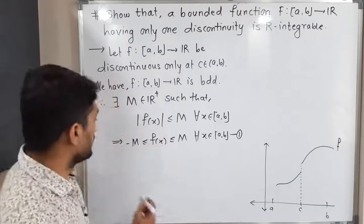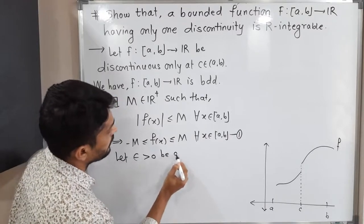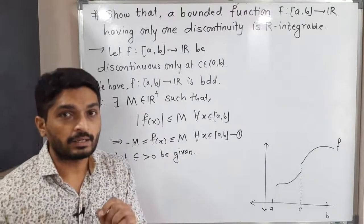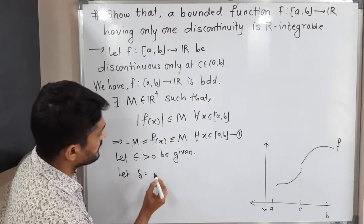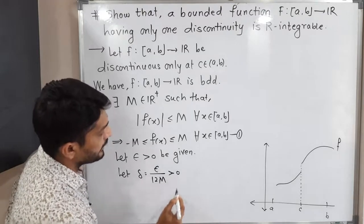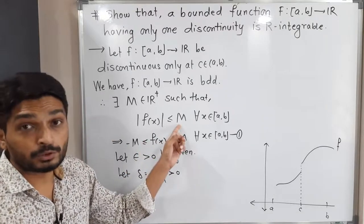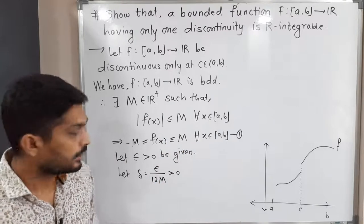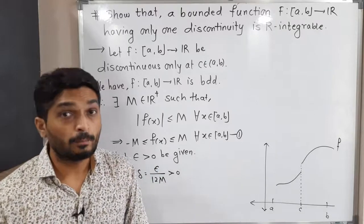Let epsilon > 0 be given. We select delta as follows: let delta = epsilon / (12M), which is obviously greater than zero, since epsilon, M, and 12 are all positive. Therefore our delta is also positive.